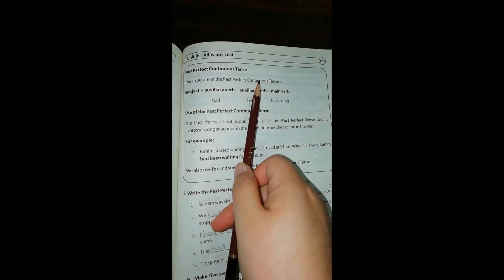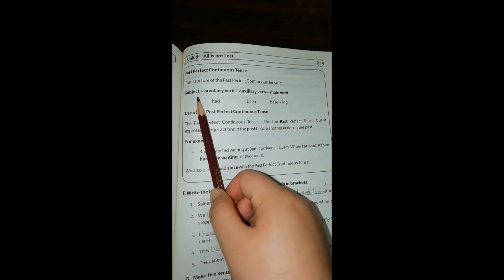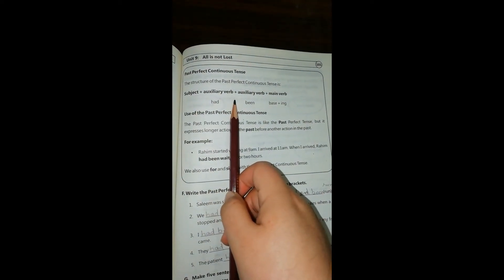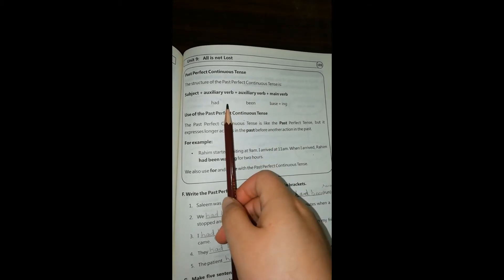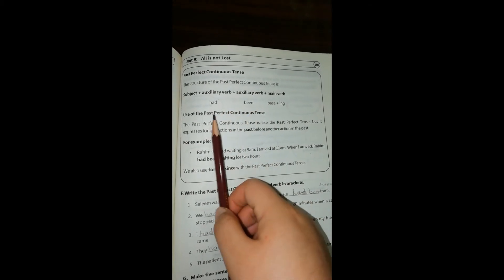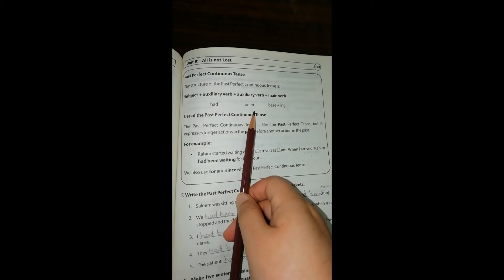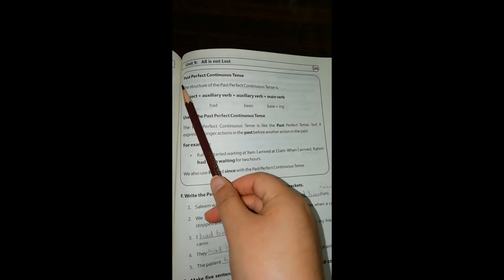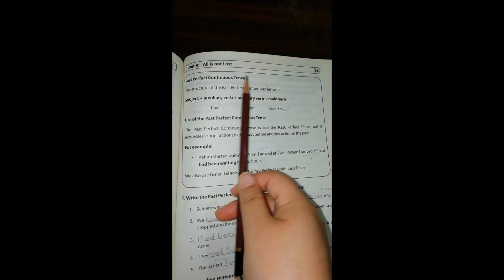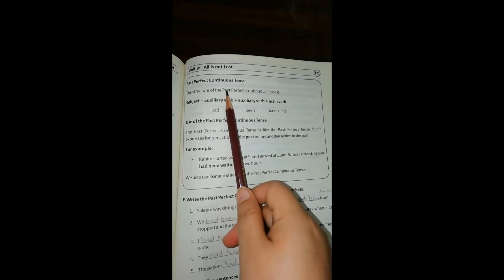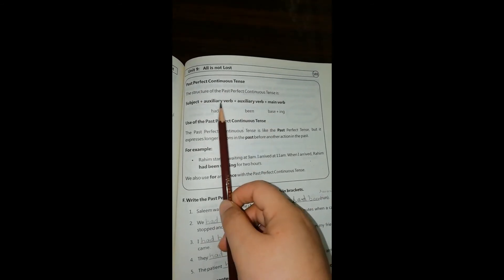Then we have past perfect continuous tense. What is the structure? Subject, auxiliary verb plus main verb. We can also call them helping verbs. We use had been, base form of verb, and then -ing in the perfect continuous tense. For perfect we have had, from continuous we have base form and -ing, and what joins them together is been.